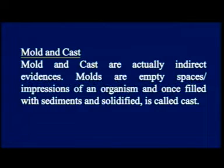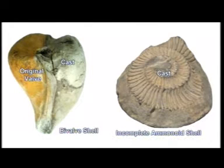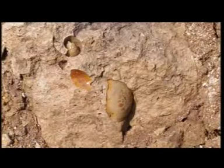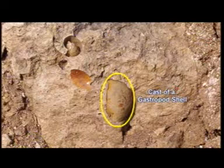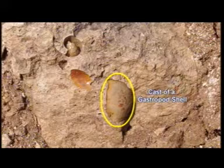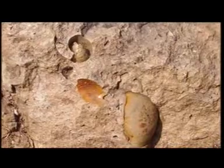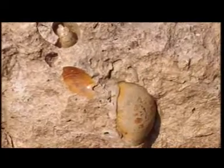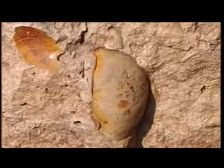We also have two other modes of preservation known as mold and cast. Whatever the literal meaning of these terms, they have the same sense in paleontology — they are indirect evidences. If an animal lives on a soft sediment, it can make an impression of its body. Once the sediment becomes solid and the animal is no longer there, the cavity or empty space may later be filled by sediments, and that solid portion gives the shape of that fossil. If it is not filled, it is a mold; if it is filled and retrieved, it becomes a cast.